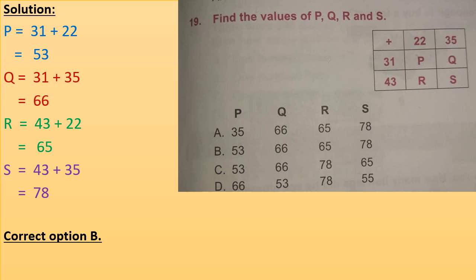We have to find out the value of P, Q, R and S. Now from the table P equals to 31 plus 22 equals to 53. Q equals to 31 plus 35 equals to 66.